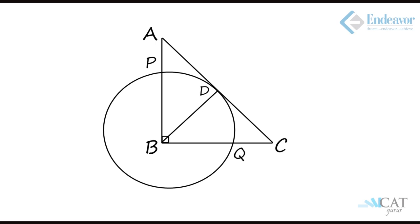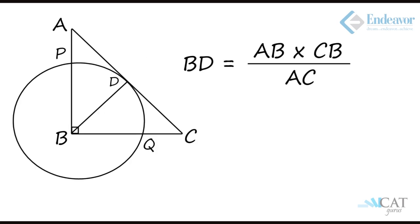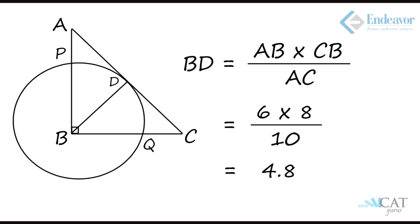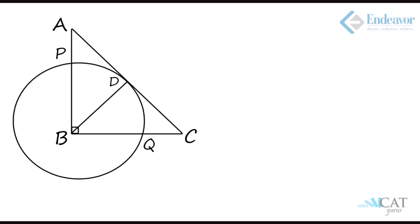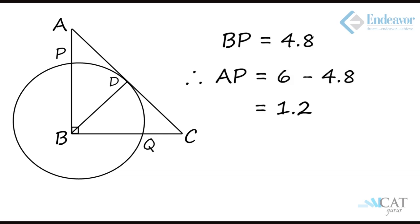Side BD is the product of AB and CB divided by AC, that is 6 into 8 divided by 10, giving BD as 4.8. Considering 4.8 as the radius, the circle drawn from B intersects AB at point P, so BP is 4.8. As AB is 6 units, AP will be 6 minus 4.8, that is 1.2 units.